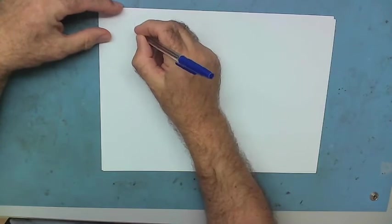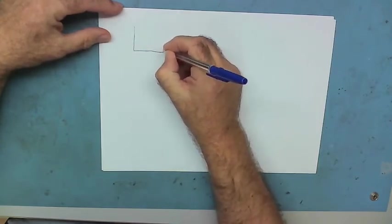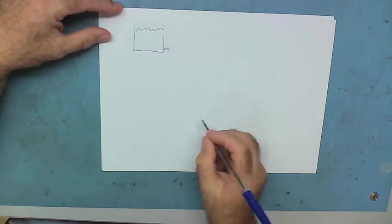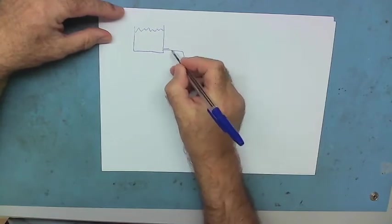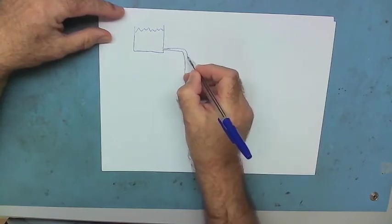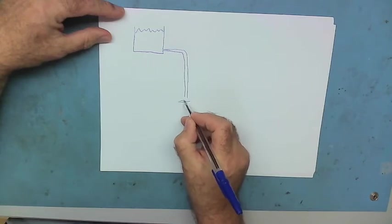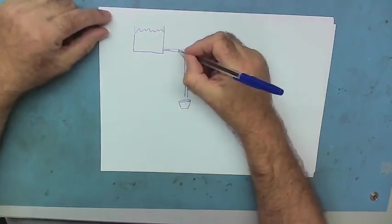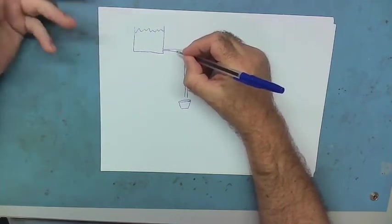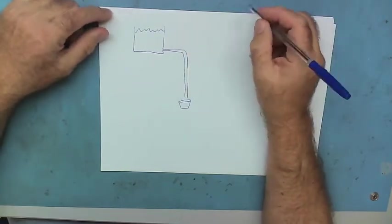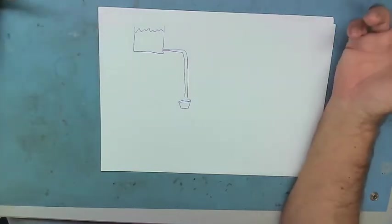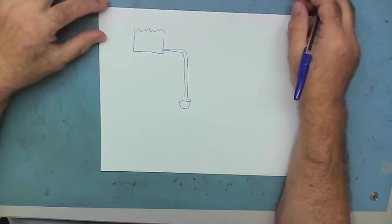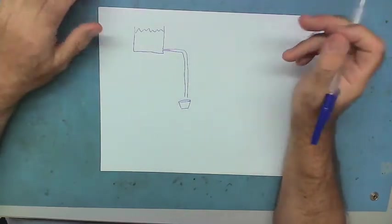This is what he drew on the board. He said this is a water tank, full of water, and this is a pipe. The pipe comes down here and this is a bucket. We can put a tap here. When the tap's turned on, what happens? Water comes out of the pipe and starts to fill the bucket.